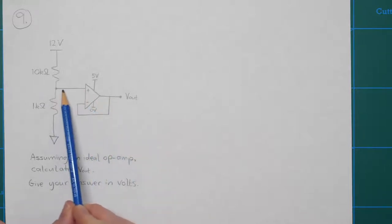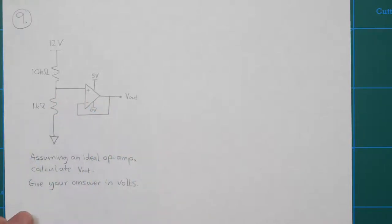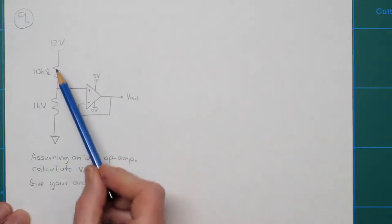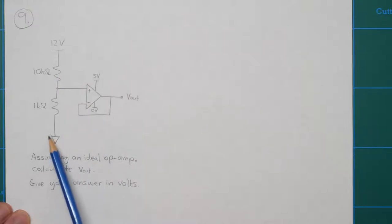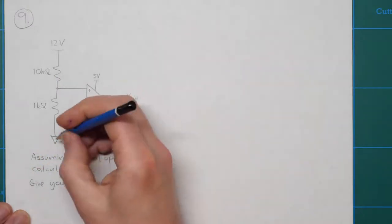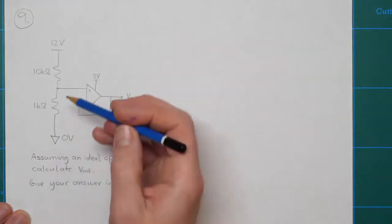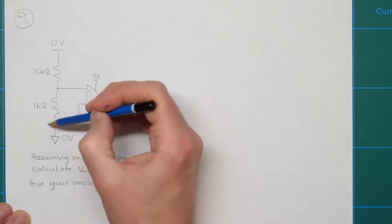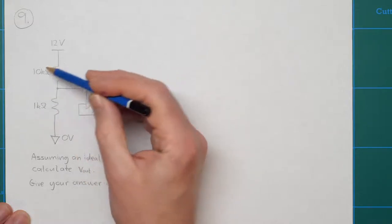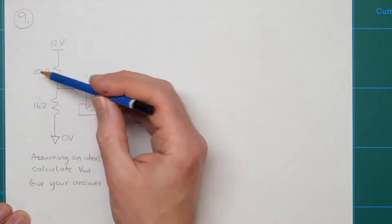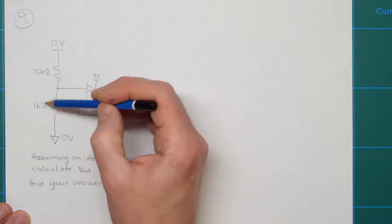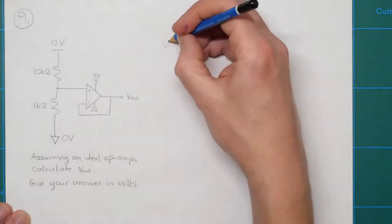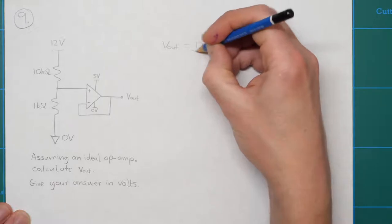Vout should be the same as the voltage at the input node. In this circuit we've got a voltage divider: the bottom node is grounded at zero volts, and the bottom resistor is one eleventh of the total resistance. The total resistance is 11 kilohms (1 + 10 kilohms), so this resistor is one eleventh of that. We're going to see one eleventh of the supply voltage, so Vout equals 12 divided by 11.